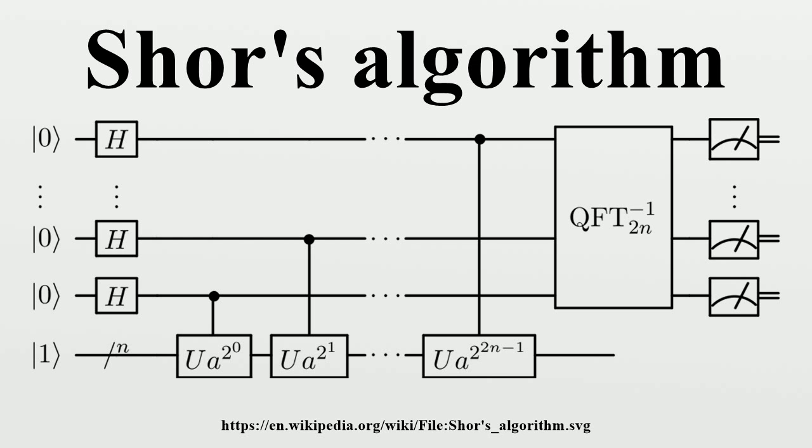For example, where n=15 and a=7. Quantum part: period-finding subroutine. The quantum circuits used for this algorithm are custom designed for each choice of n and each choice of the random a used in f(x) = a^x mod n.